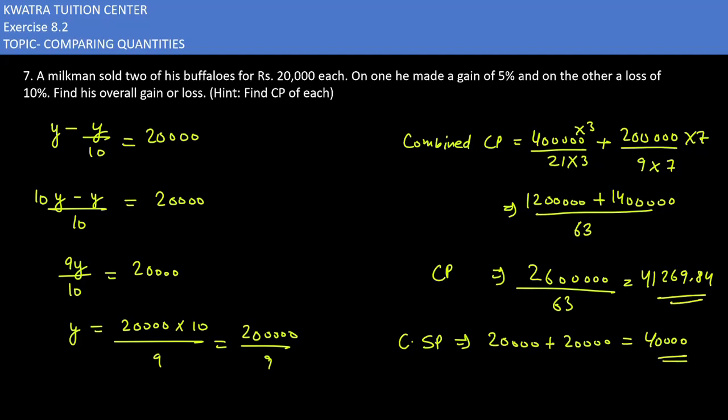The information is that cost price is greater than SP, so there is loss. Loss equals CP minus SP. This is the overall loss over two buffaloes to the milkman, which is Rs. 1,269.84. This is the answer to question number 7.